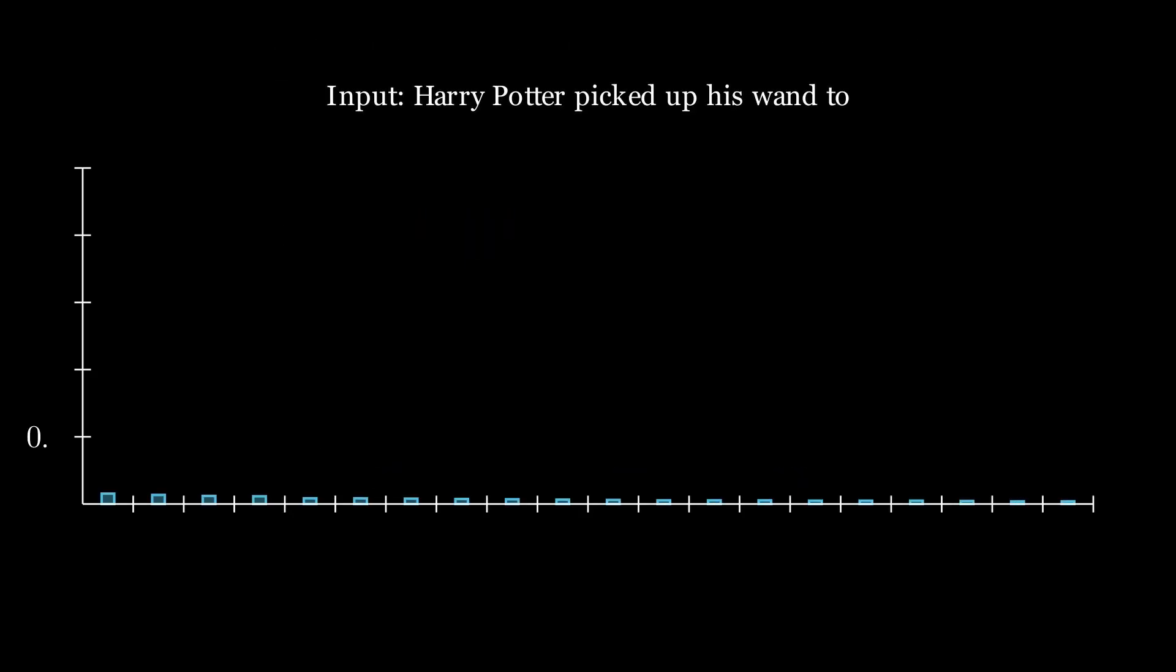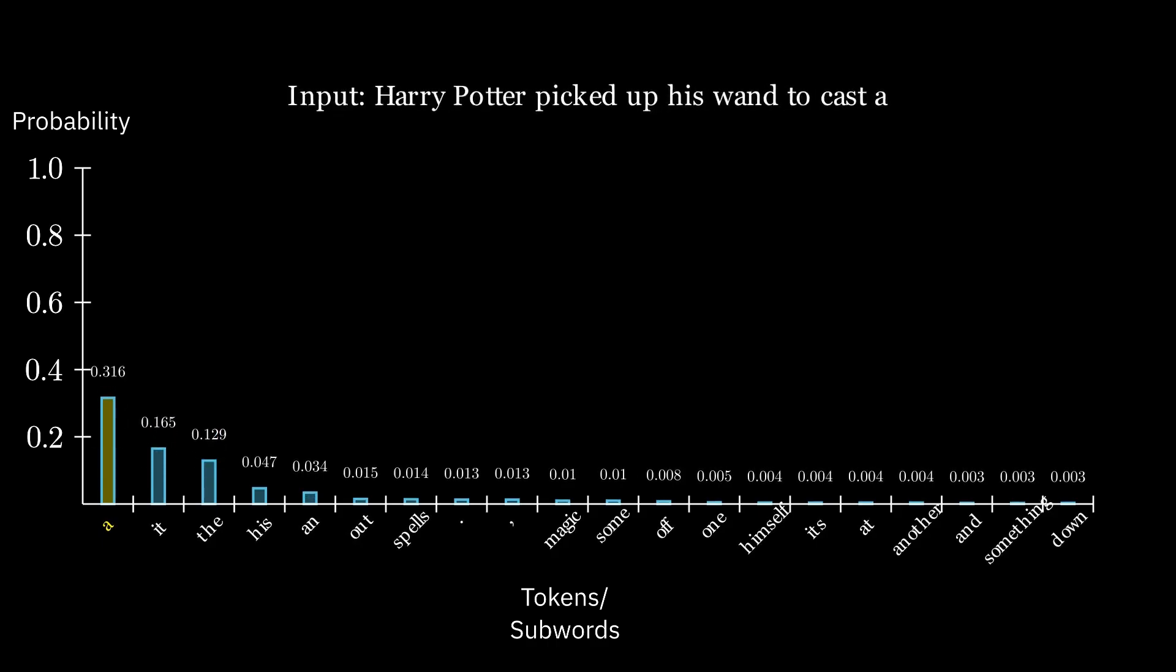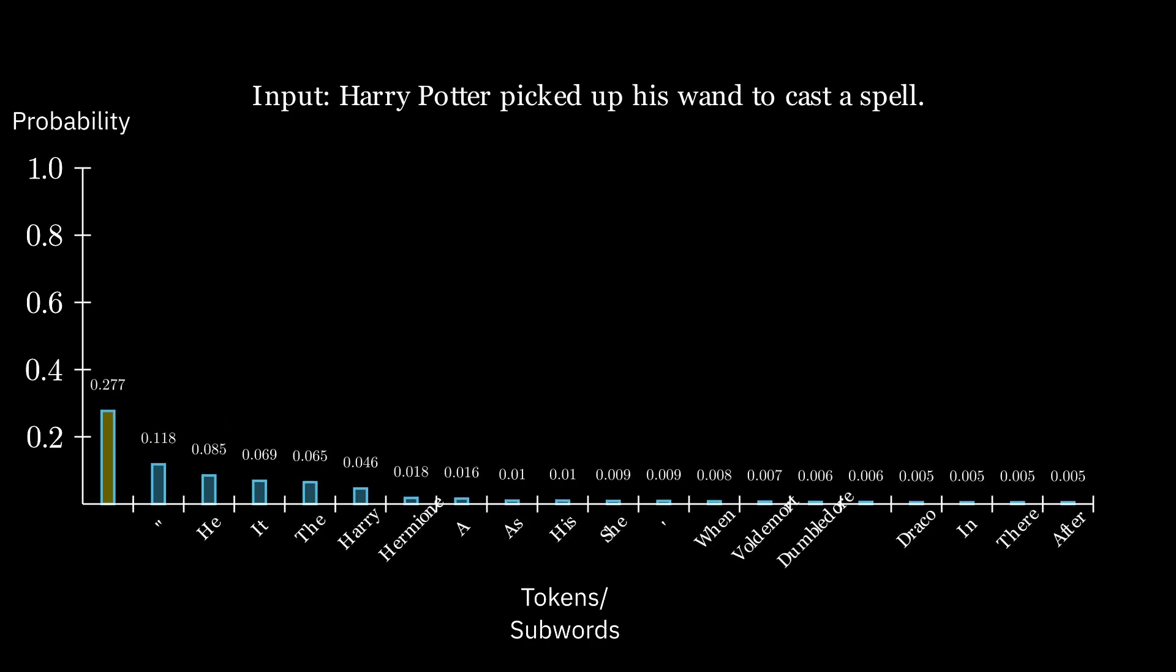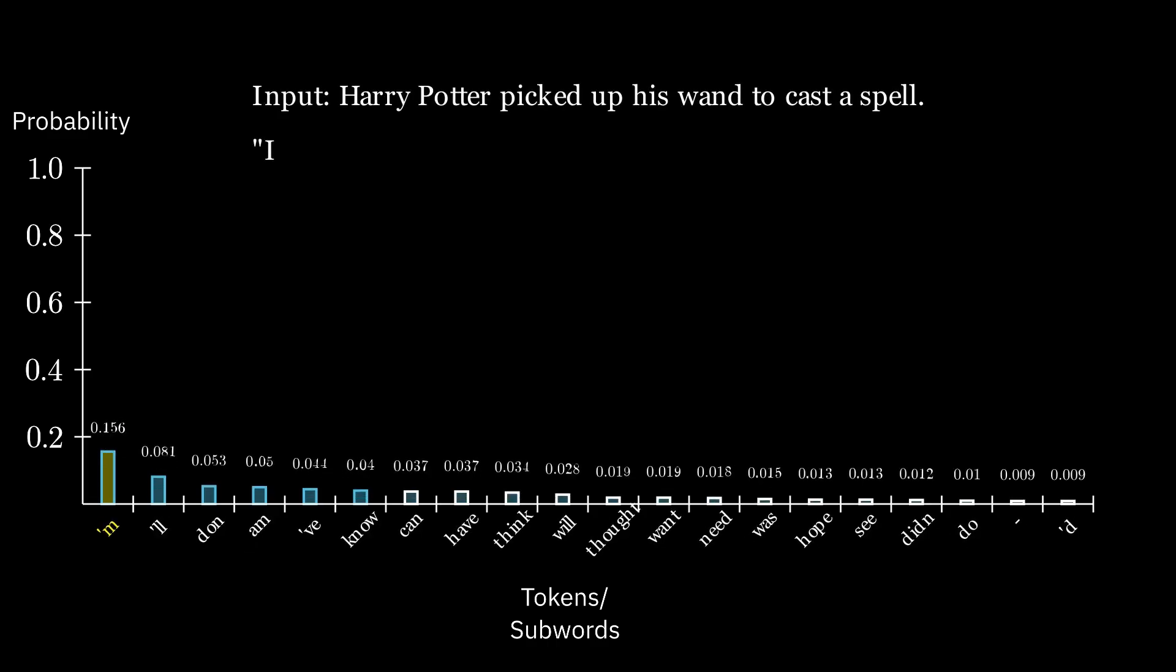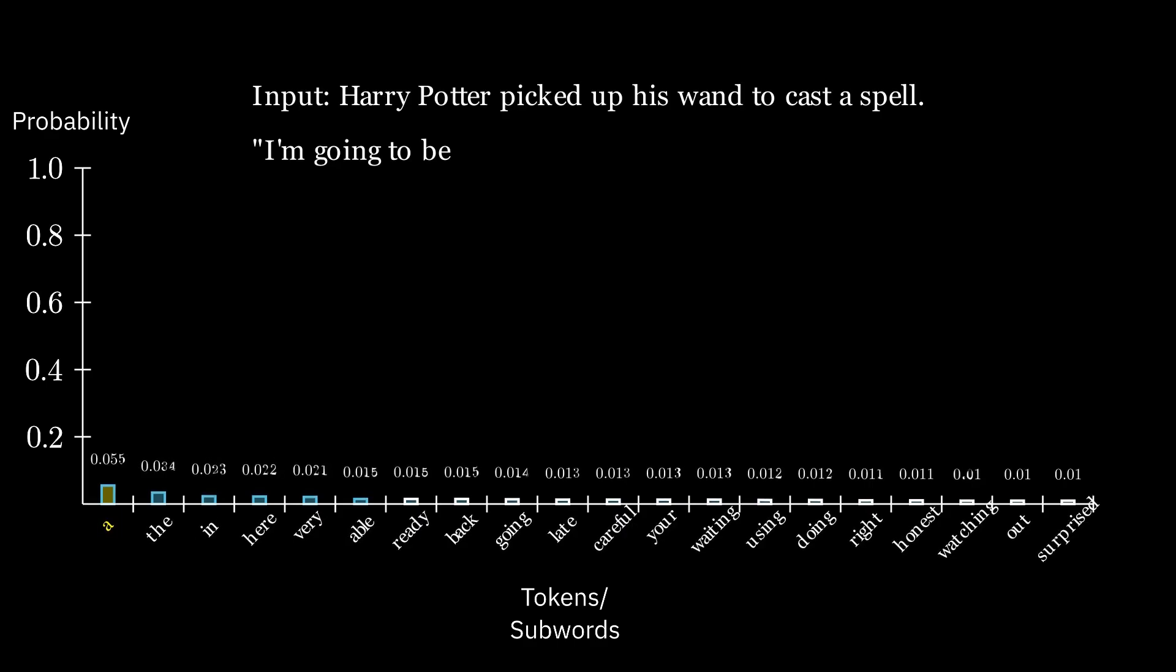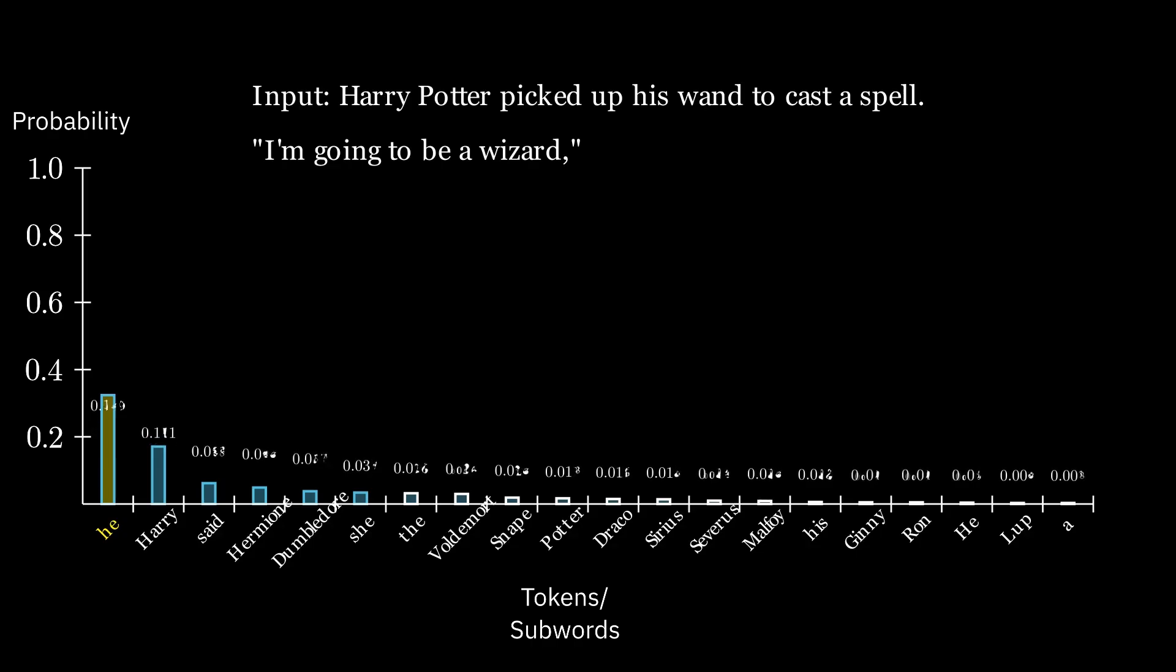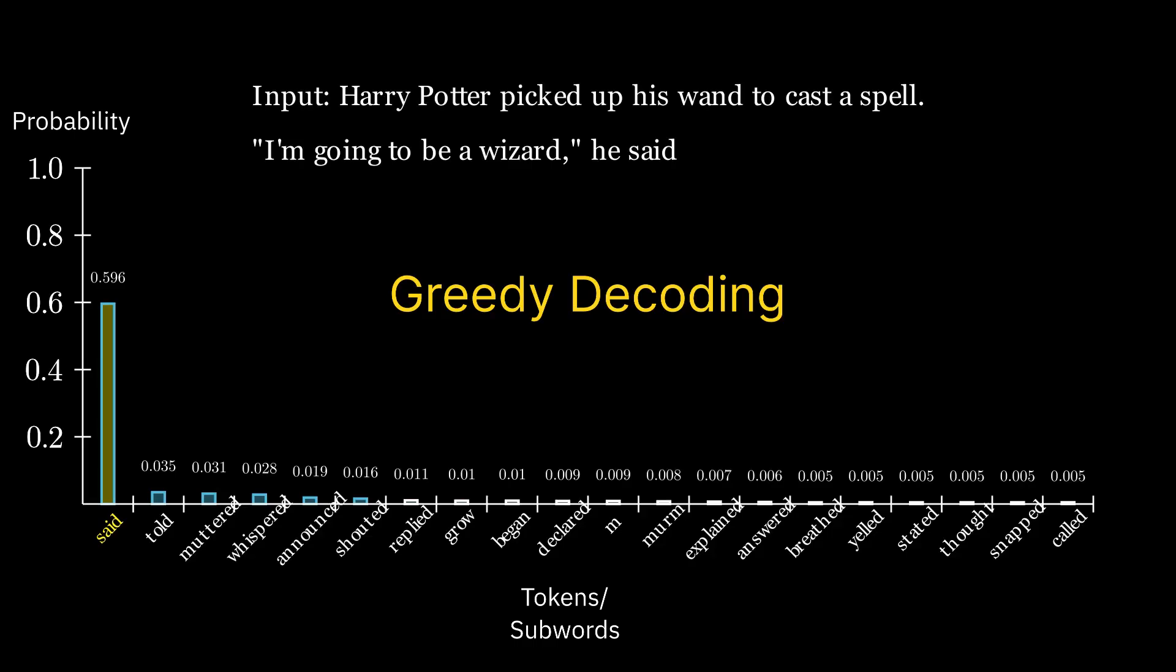Let's take an example of an input sentence and look at the probability distribution of the model while predicting the next word in the sequence. Note that the tokens are arranged in descending order with respect to their probability values, and each time the next token predicted was the token with the highest probability score. This is known as greedy decoding.